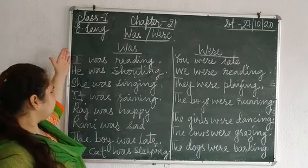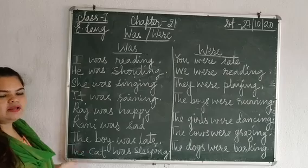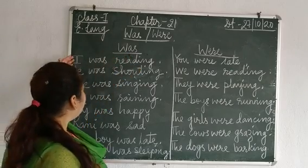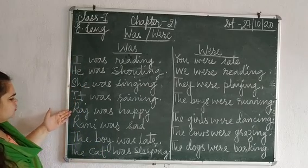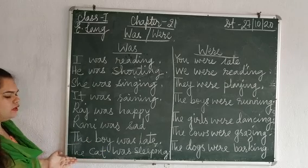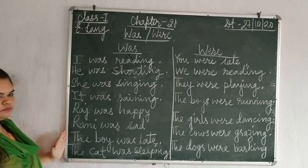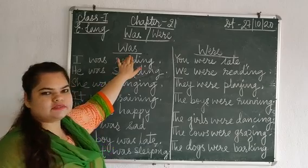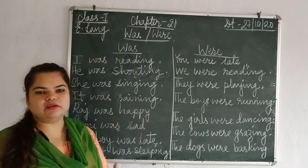Here I have written down a few pronouns and nouns to help you know where was is used: I, he, she, it, Raj, Rani, the boy, and the cat. These nouns and pronouns are always used with was because it tells us something that is in a singular place.